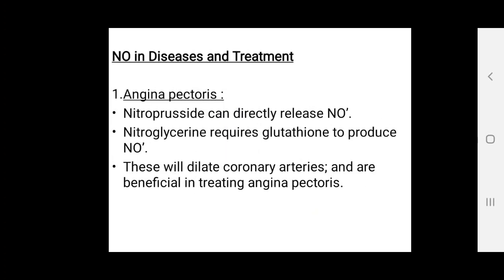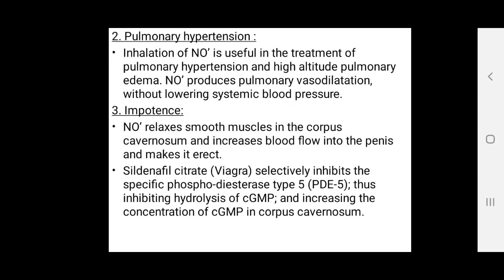Nitric oxide is also used therapeutically. In angina, nitroprusside can directly release nitric oxide, while nitroglycerin requires glutathione to produce nitric oxide; these drugs dilate coronary arteries and are beneficial in treating angina. In pulmonary hypertension, inhalation of nitric oxide is useful.